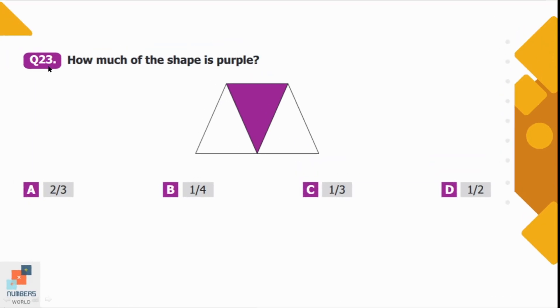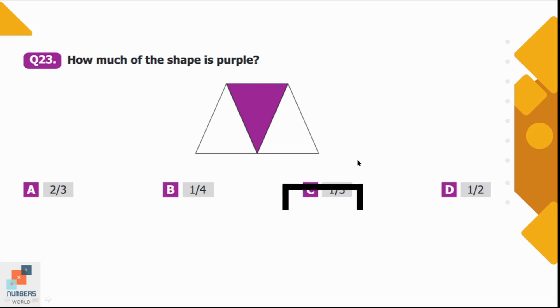Question number 23: How much of the shape is purple? Out of 3 parts, 1 part is purple, so the fraction is 1/3. Option C is the correct option.